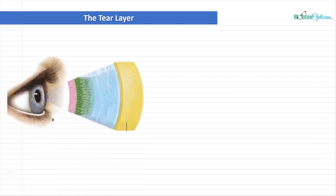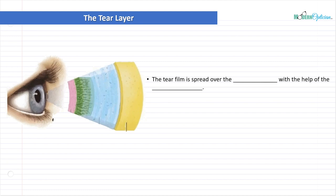Let's take a look at a diagram here. You'll see there's the eye and a cross section of the different parts of the tear layer. We're going to go bit by bit through this, talking about what all these different layers are. The tear film is spread over the cornea — the outermost portion of the eye — with the help of the eyelids. The eyelids are like little windshield wipers. They move the tears around. The lacrimal gland excretes most of the tears onto the eye, and it works its way down into the lacrimal lake.